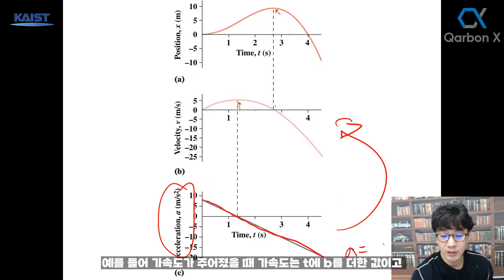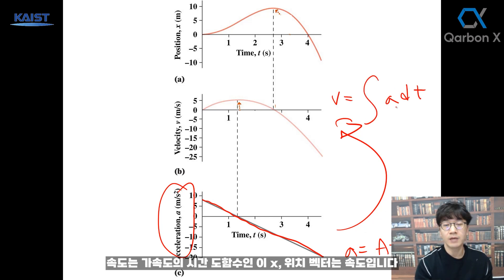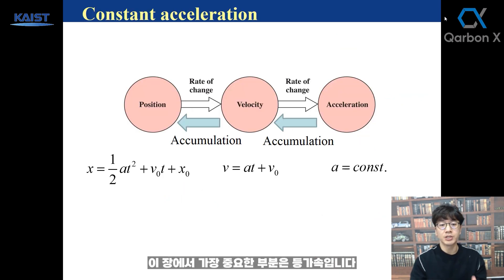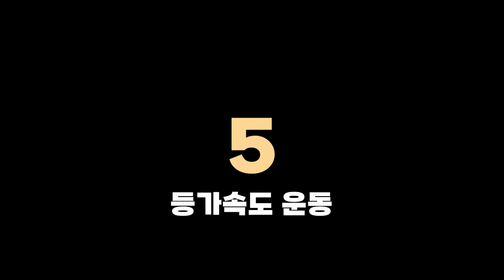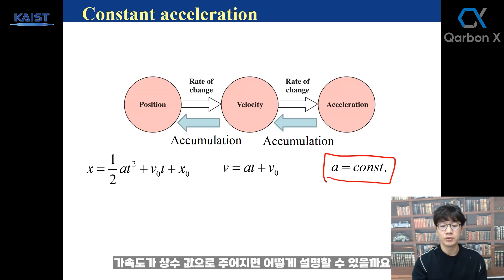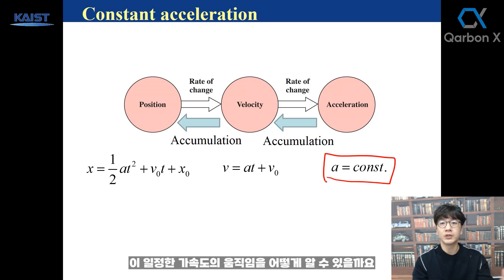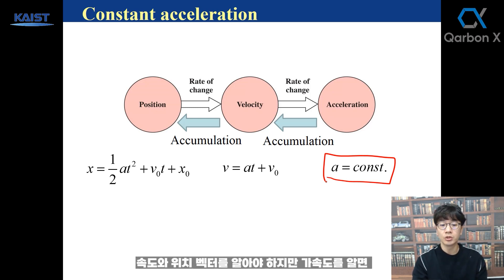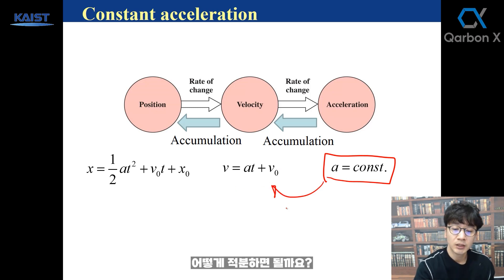The most important part of this chapter is constant acceleration — in this chapter and the next. If acceleration is given as a constant value, how do we describe the motion? We need to know velocity and position vector, and we already know how to get those from acceleration: we can do integration.